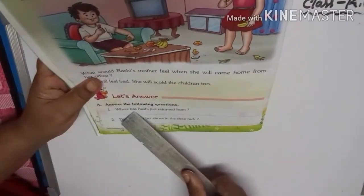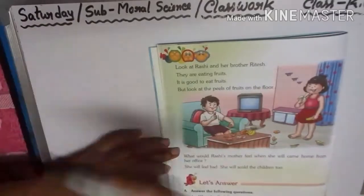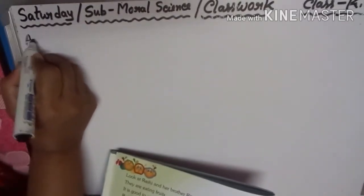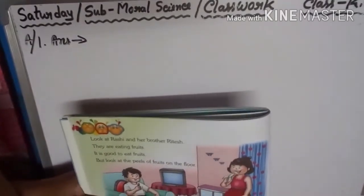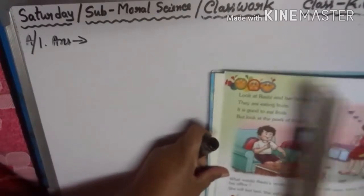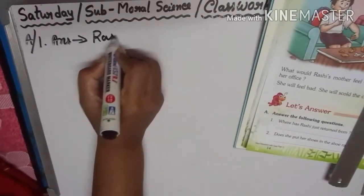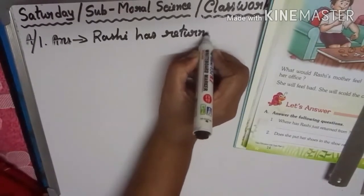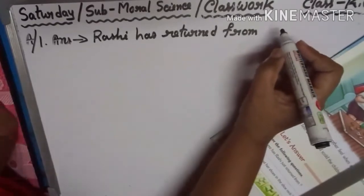Number 1 — where has Rashi just returned from? Follow me, I am writing. Question A1: Where has Rashi just returned from? Answer: Rashi has returned from school.